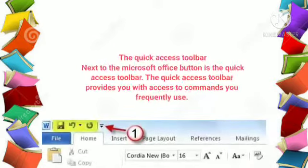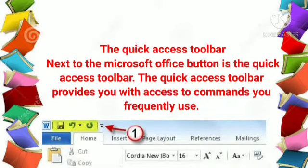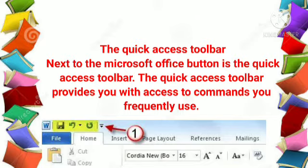Next to the Microsoft Office button is the Quick Access Toolbar. The Quick Access Toolbar provides you with access to commands you frequently use. By default, Save, Undo, and Redo appear on the Quick Access Toolbar. You use Save to save an object. The Undo function is used to reverse a mistake, such as deleting the wrong word in a sentence. Ctrl+Z is the shortcut key for Undo.